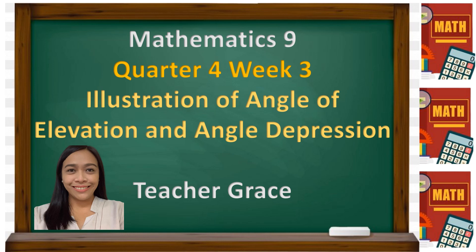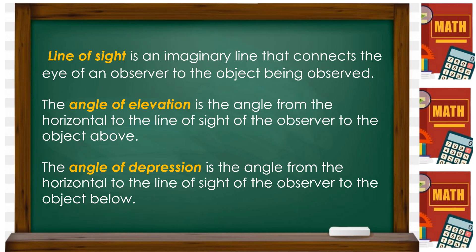What is the angle of elevation and what is the angle of depression? We have the definition of line of sight, angle of elevation, and angle of depression. The line of sight is an imaginary line that connects the eye of an observer to the object being observed. There are two kinds: the angle of elevation is the angle formed from the horizontal to the line of sight of the observer to the object above, and the angle of depression is the angle from the horizontal to the line of sight of the observer to the object below.